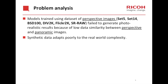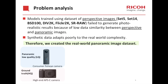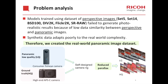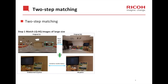Therefore, we created a real-world panoramic image dataset. We use a consumer fisheye camera to capture low-quality images and a high-end APS-C camera to capture ground truth high-quality images. A self-designed camera rig is used to reduce parallax between the two cameras. We capture three low-quality images along the horizontal direction and five high-quality images by rotating the high-end camera along the tripod to ensure we cover 360 degrees along the horizontal axis. Then we use a two-step matching strategy to align our images for training.